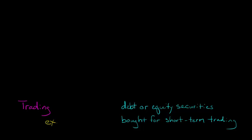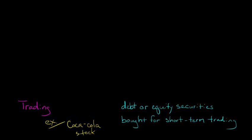So let's say that your firm decides to buy some stock in Coca-Cola. What's your firm's purpose with this stock? If you think this Coca-Cola stock is going to go up in the next month or two in value and then you're going to sell it, then basically your purpose is short-term trading — you just want to buy this stock and turn around and sell it in the short term. So this is a trading security.